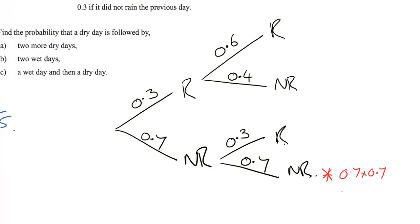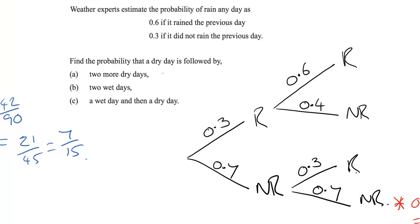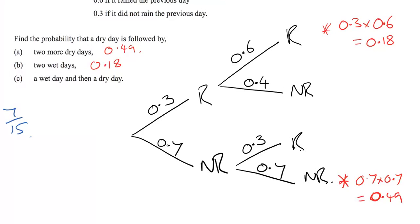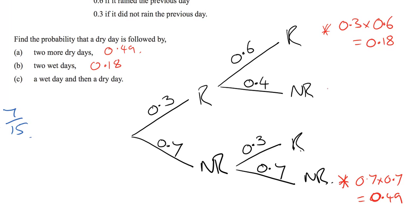0.7 times 0.7 is 0.49, so answer a is 0.49. Two wet days in a row is rain followed by rain: 0.3 multiplied by 0.6 is 0.18, so b is 0.18. A wet day then a dry day — order matters here — is 0.3 multiplied by 0.4, which is 0.12.